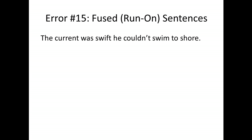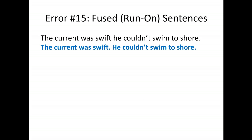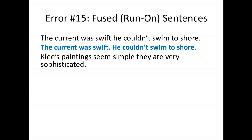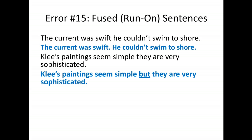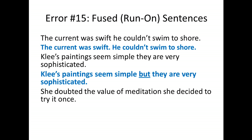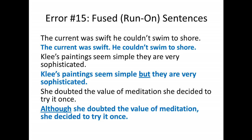Error fifteen is fused or run-on sentences. 'The current was swift he couldn't swim to shore' should be two sentences: 'The current was swift. He couldn't swim to shore.' 'Clee's paintings seem simple they are very sophisticated' — in this case we use a conjunction: 'Clee's paintings seem simple, but they are very sophisticated.' 'She doubted the value of meditation she decided to try it once' gives us a different structure: 'Although she doubted the value of meditation, she decided to try it once.'